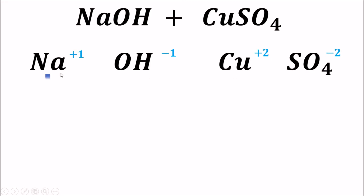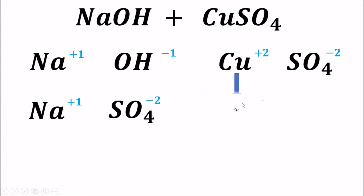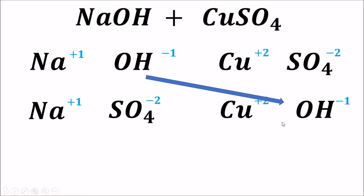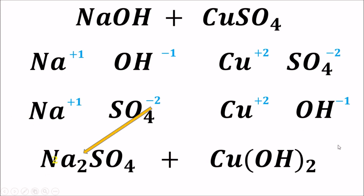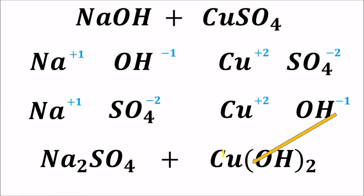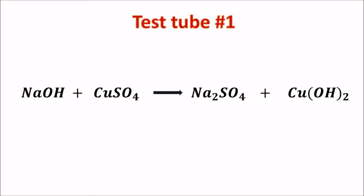They will change partners. Na will partner with sulfate, and copper will partner with OH or hydroxide, since this is a double displacement reaction. So we now have sodium sulfate and copper hydroxide. The equation for test tube number 1 is: sodium hydroxide plus copper sulfate yields sodium sulfate plus copper hydroxide.